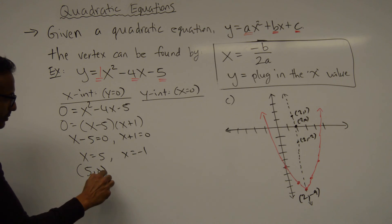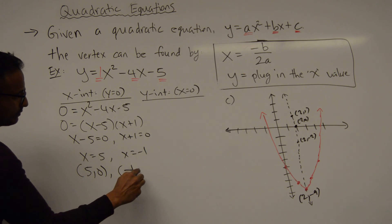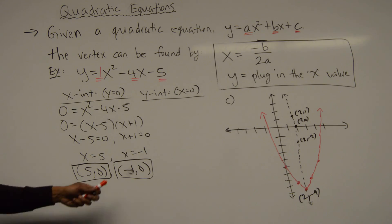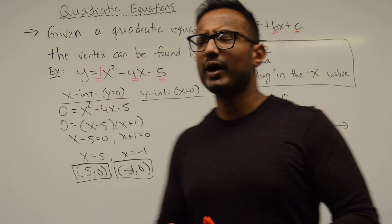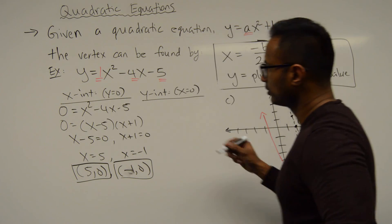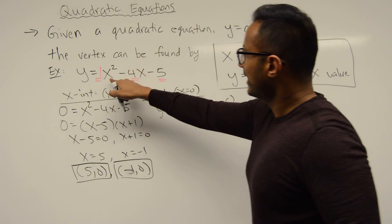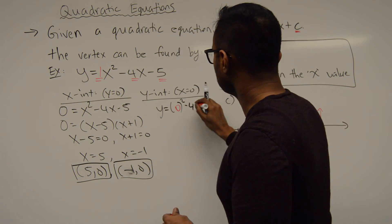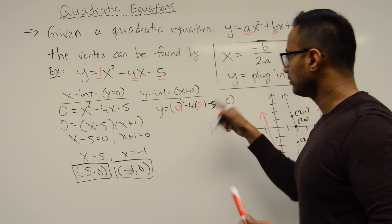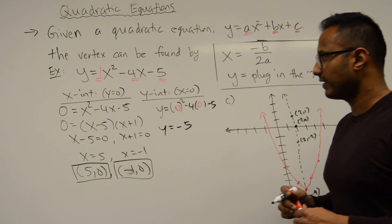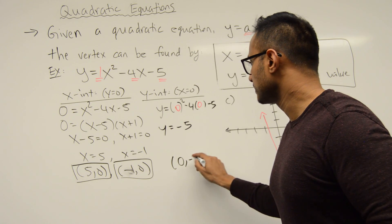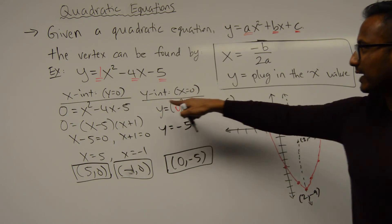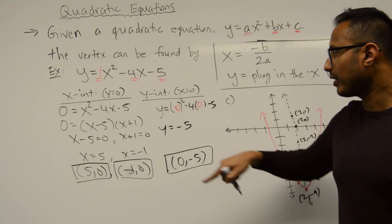Since y = 0 when finding x-intercepts, our x-intercepts are (5, 0) and (-1, 0). To find the y-intercept, set x = 0: y = 0² - 4(0) - 5 = 0 - 0 - 5 = -5. So the y-intercept is (0, -5).